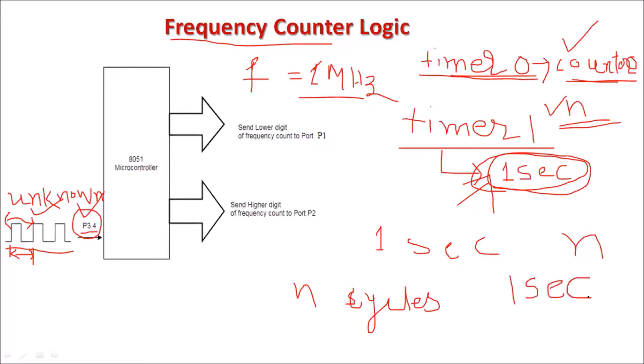N number of unknown cycles are counted during the 1-second delay. So the time period for 1 cycle is 1 second divided by N.